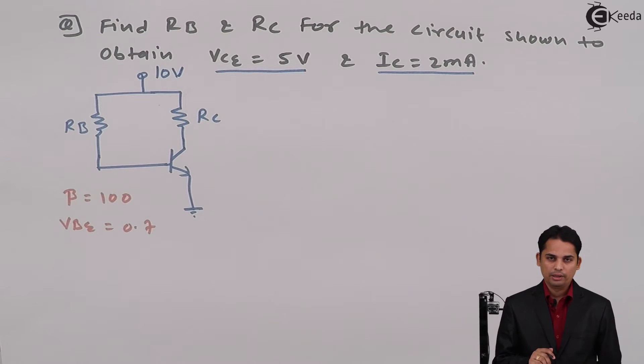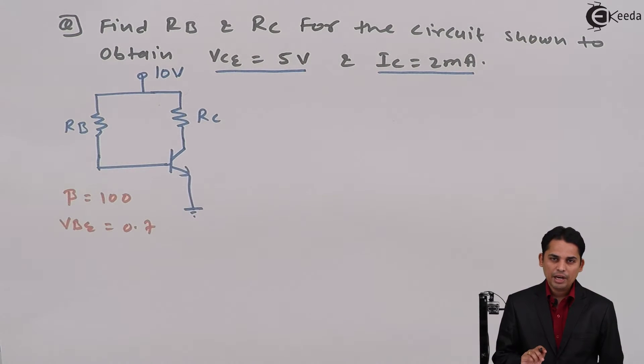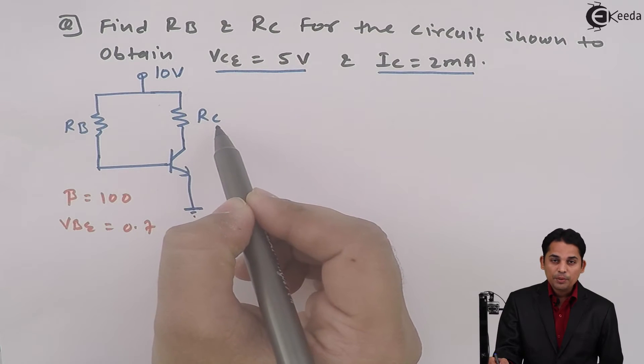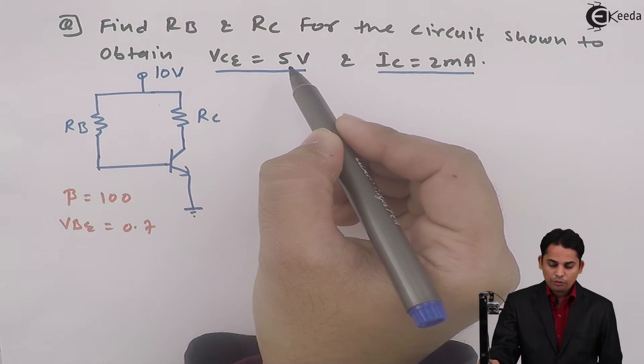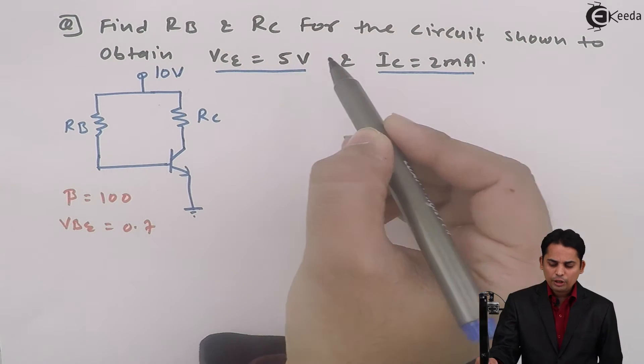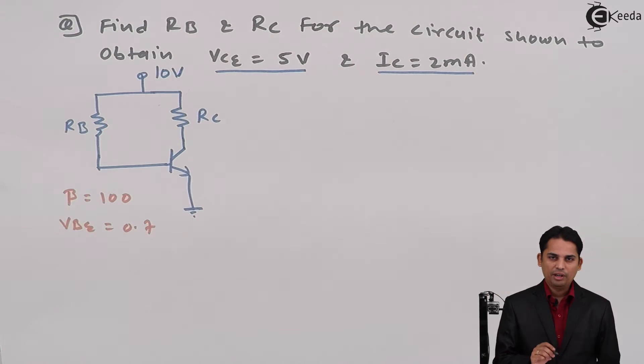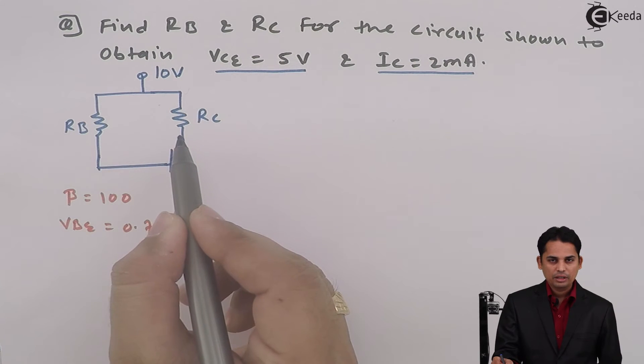The circuit given is a fixed bias circuit in which the values of RB and RC are missing. For this Q-point, we need to calculate the value of RB and RC. In other words, I want to design the circuit so that the Q-point will be 5 volts and 2 milliamperes respectively.